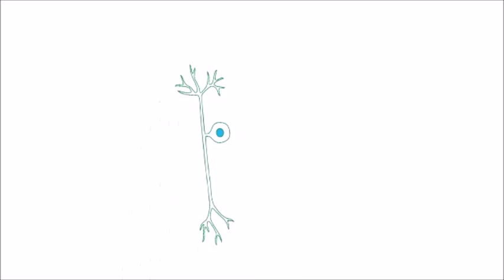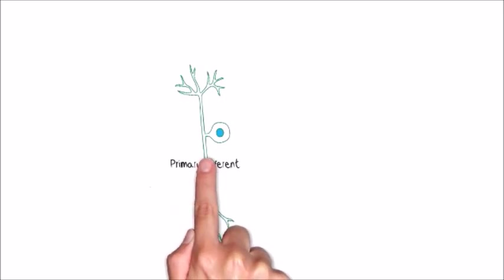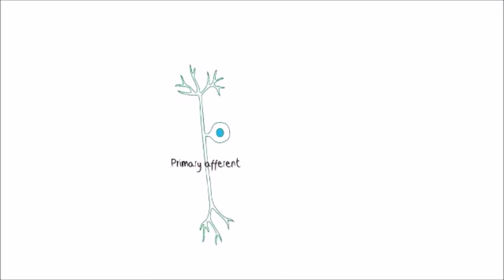Here we have three nociceptive neurons, or primary afferents. These neurons would be in the peripheral nerve.